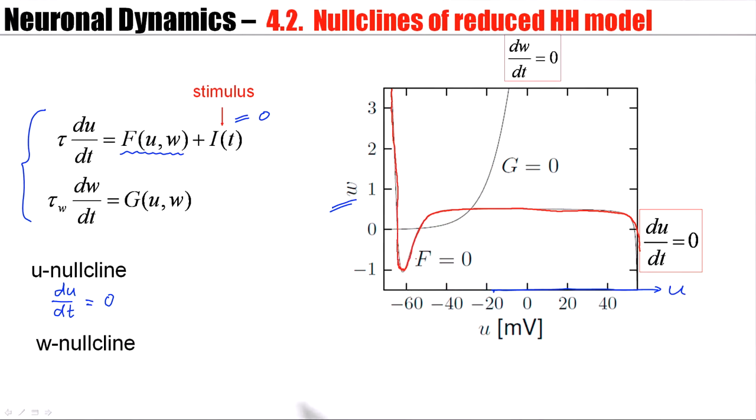Now we can do the same thing for W and look at all the points which have dw/dt equals zero. These are the points where the function G of U and W is zero. And for our Hodgkin-Huxley model reduced to two dimensions, that's this set of points. So we have two curves called the nullclines of the system.